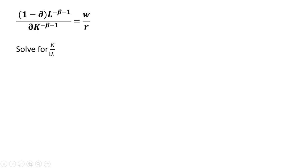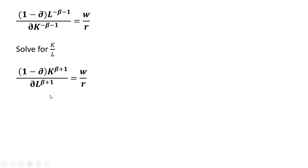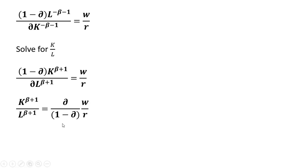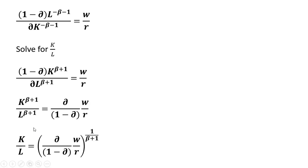After canceling those terms, we have this on the left-hand side, and we want to solve for K divided by L. Following the rules of exponents, I'm bringing the L term down to the denominator and moving the K term up into the numerator — so the signs on the exponents change. Then multiplying through by the reciprocal of 1 minus alpha divided by alpha, and moving that over to the right-hand side, we raise both sides to 1 divided by beta plus 1 to solve for K over L.